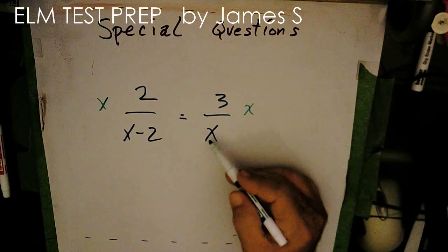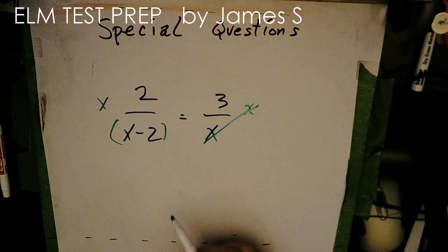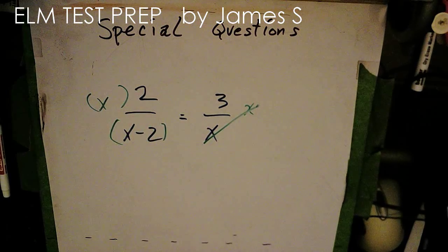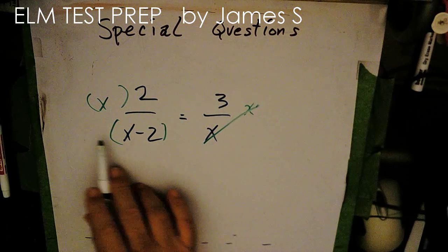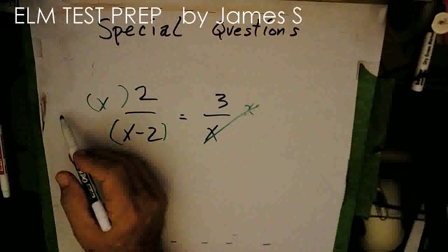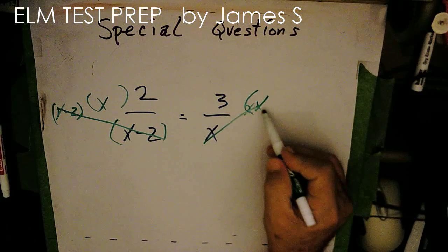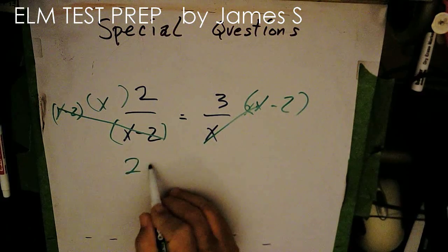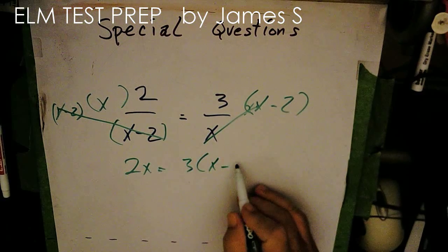Well, this will cancel over here, but it will not cancel here. So I just have 2x over that. But what I'm going to do is I'm going to multiply both sides by x minus 2, which will cancel that. And this will be x minus 2 times that. So now I have 2x equals 3 times x minus 2.